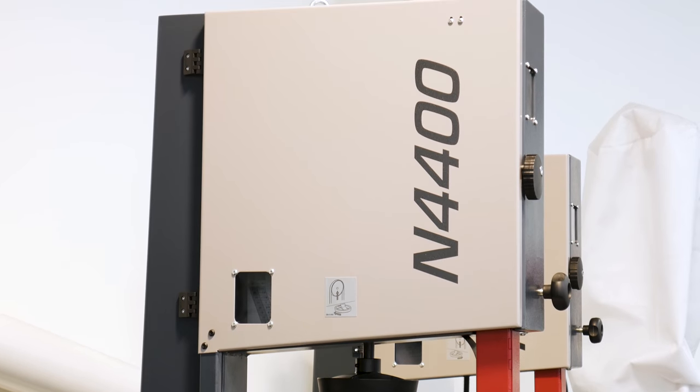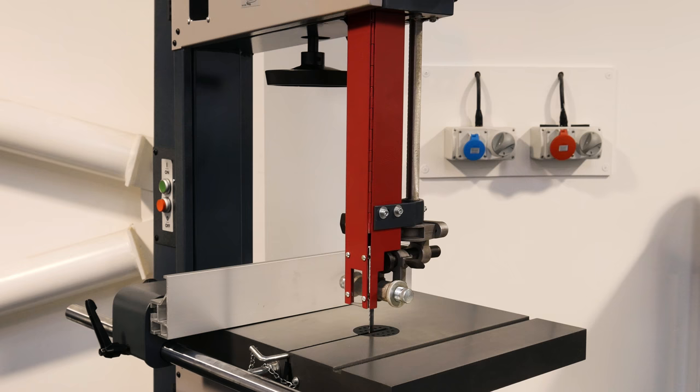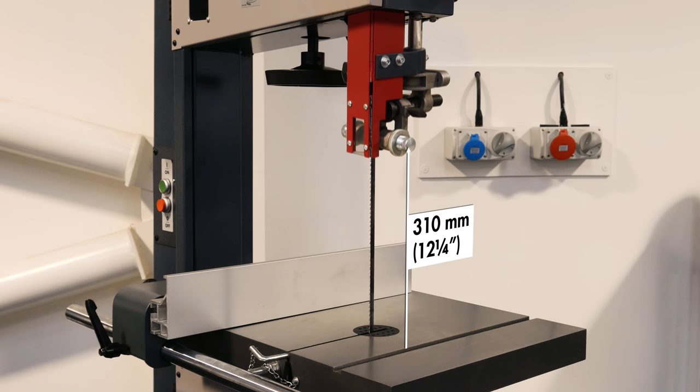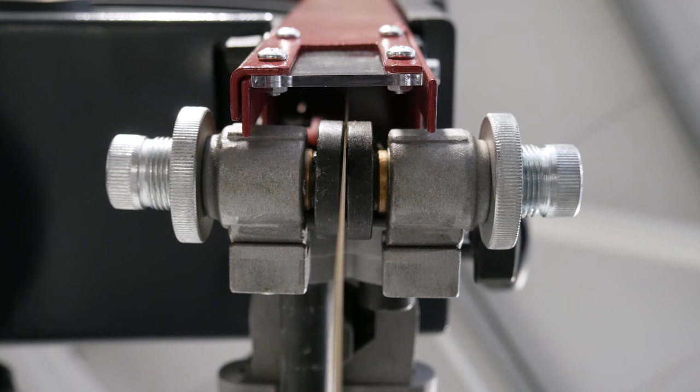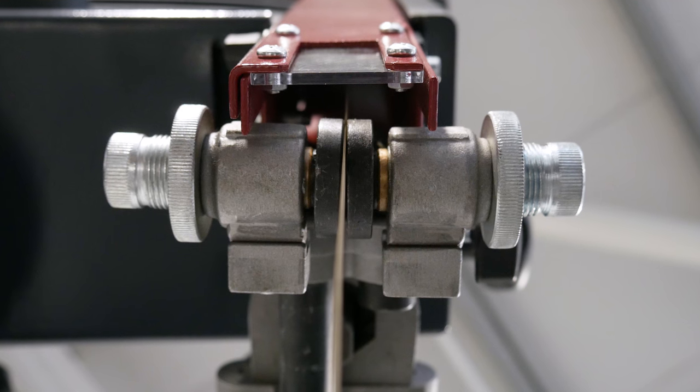The Hammer N4400 has a high cutting height of up to 310mm, which provides great versatility and enables the production of solid wood veneers as well as a range of other applications.